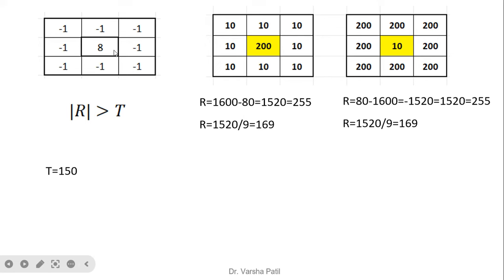We get 1520 as a result. Since this is already positive, and if the value exceeds 255, we can keep 255, or alternatively compute the average: 1520 divided by 9 equals 169, since the mask is 3 by 3. For the dark point case, we take the absolute value, making it positive. With threshold t = 150, both results exceed the threshold, so the point gets detected. This is how point detection is carried out using the high-frequency mask.